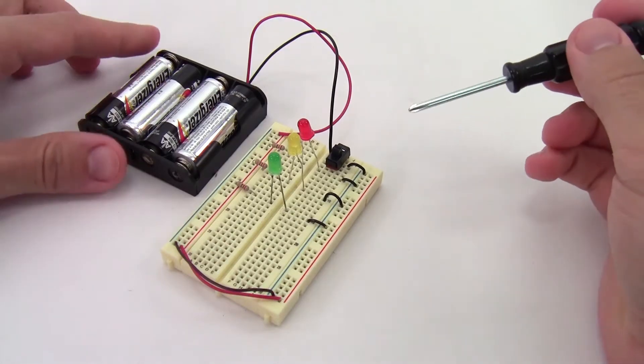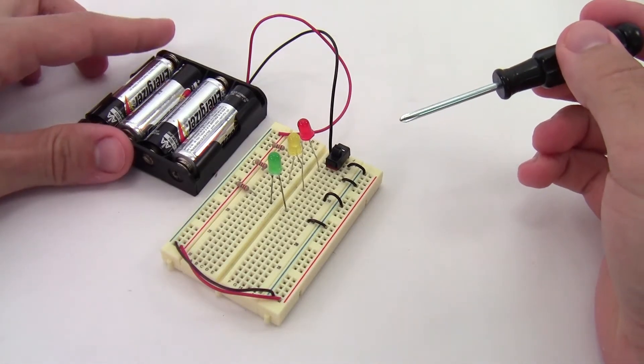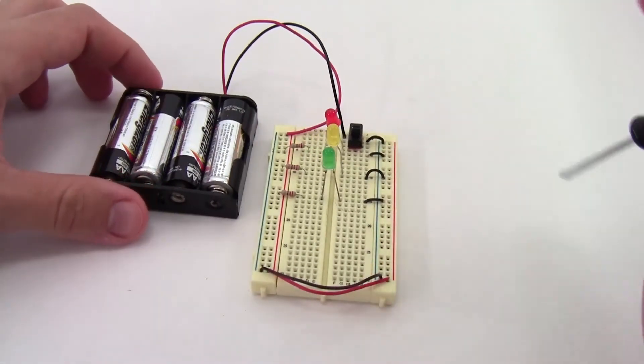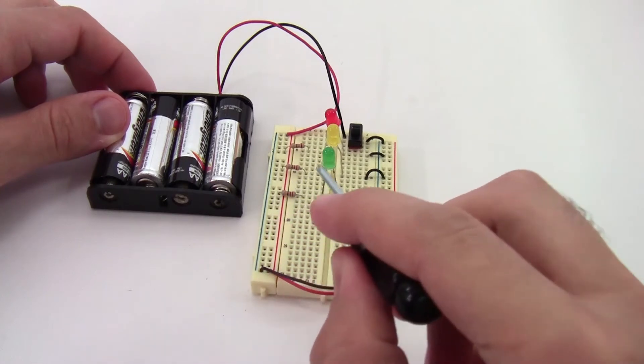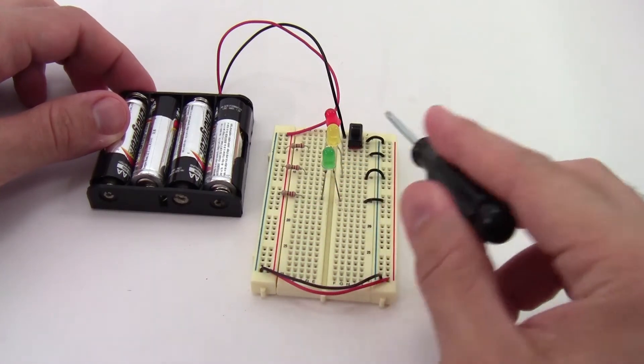First let's talk about a basic battery powered circuit with resistors and LEDs. You can see here I have a circuit built on a solderless breadboard with a battery pack, resistors, LEDs, some jumper wires, and a switch.